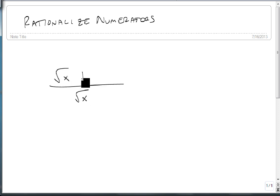So suppose I have the square root of x plus 2 over the square root of x, and I'm told to rationalize my numerator.